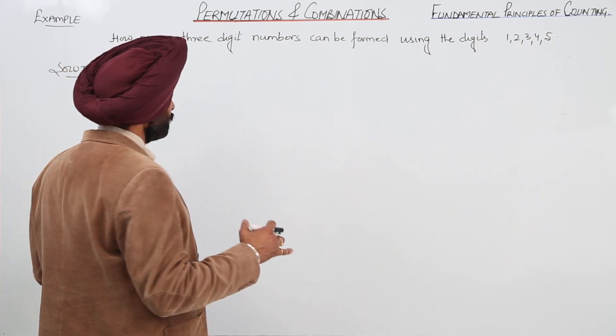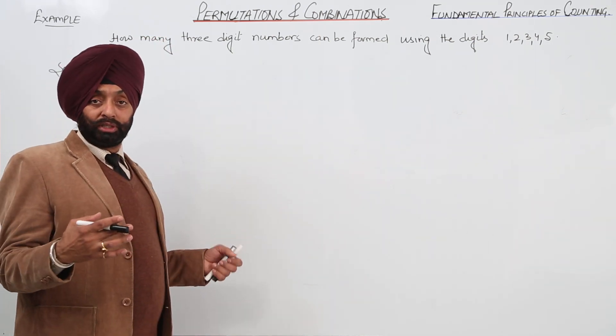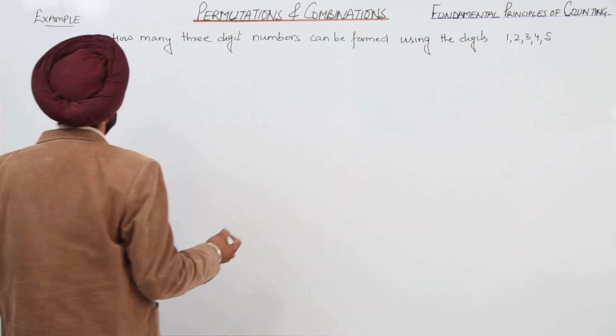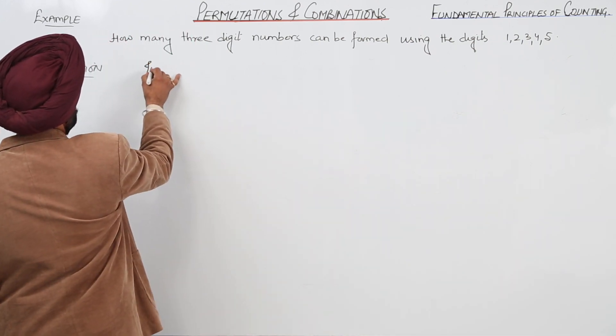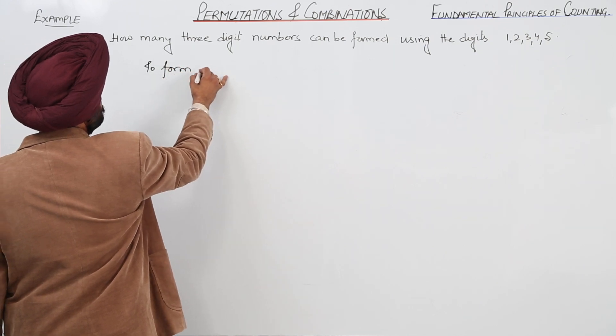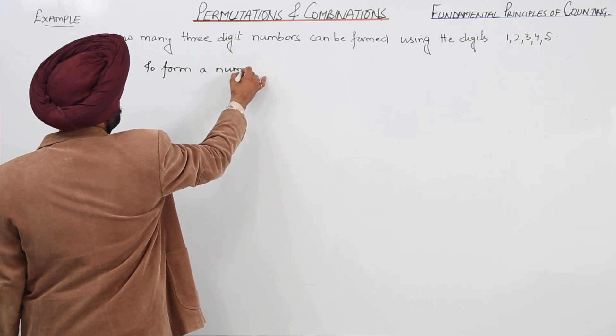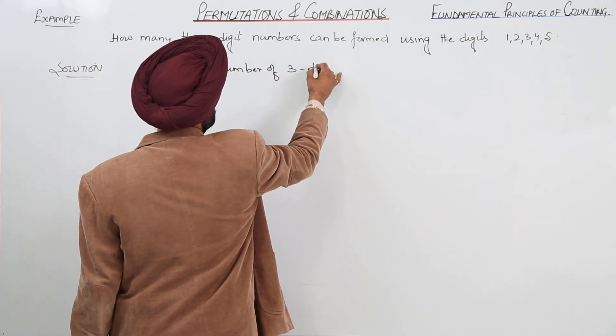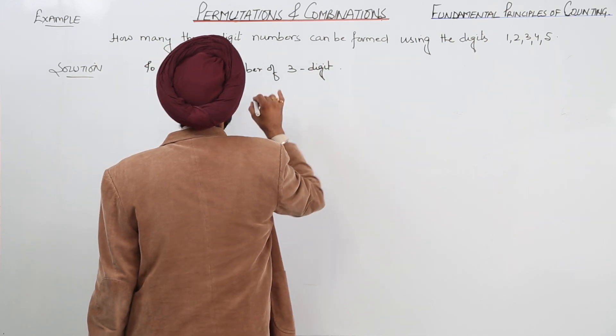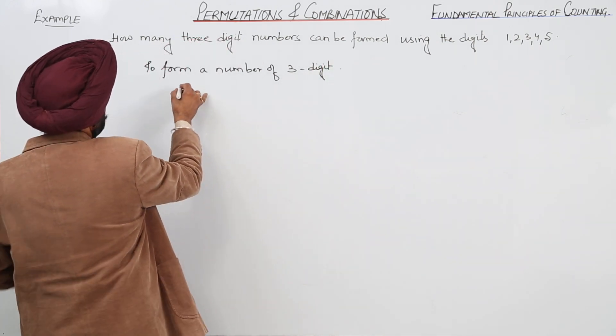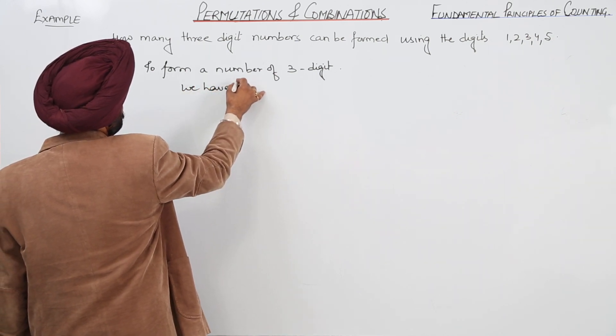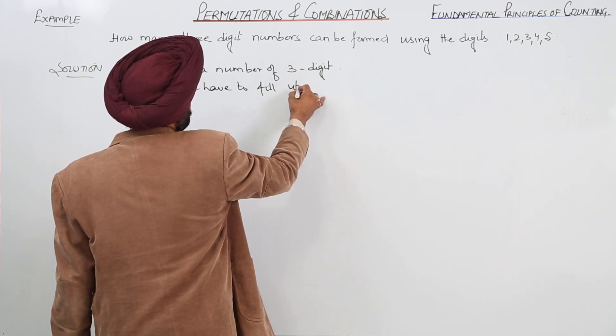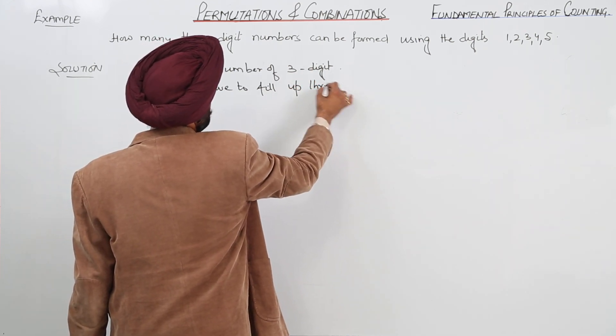Now, we need not make an arrangement for all these things. By the technique of the fundamental principle of counting, what we are going to do now? To form a number of 3-digit, we have to fill up 3 places